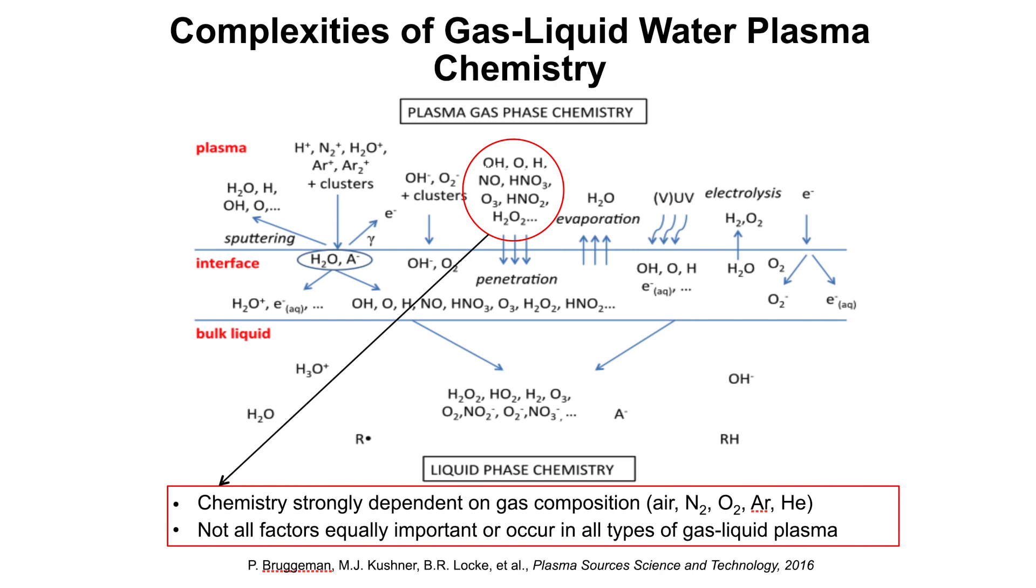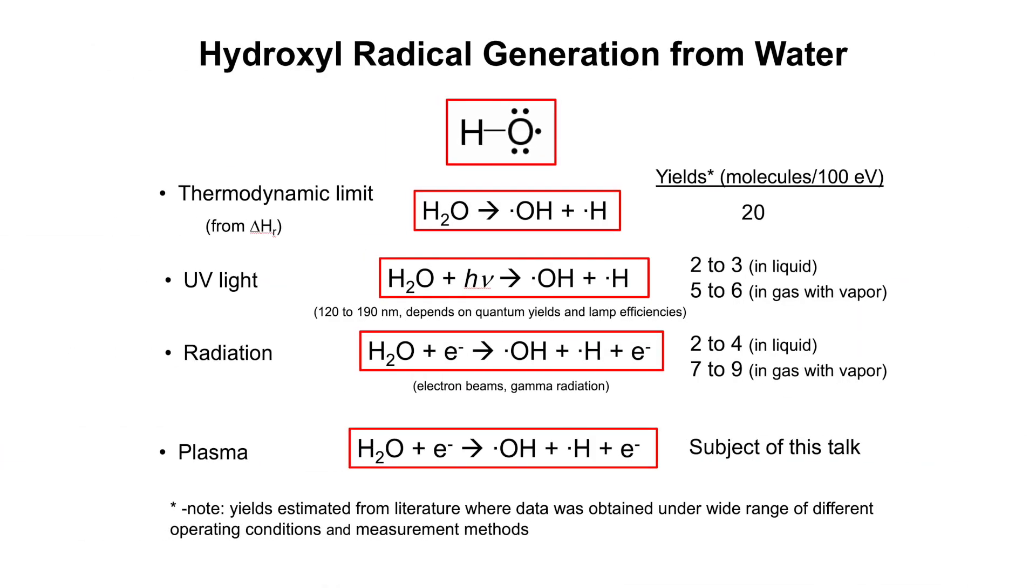If you have an atmosphere that's, let's say, pure argon, the water vapor coming into the plasma may produce what's called a hydroxyl radical.